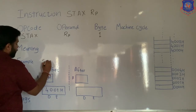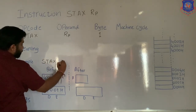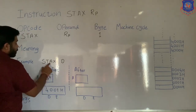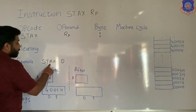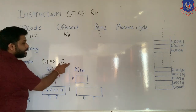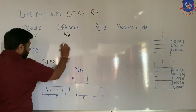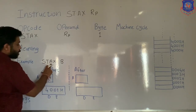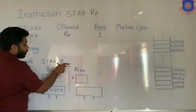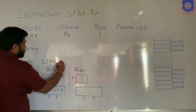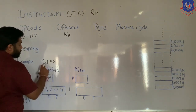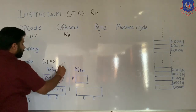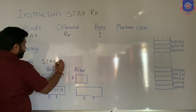Suppose the example is STAX D. STAX D means store data from accumulator to the memory location specified in DE pair. If we write STAX B, it means store data from accumulator to the memory location specified in BC pair. You can also write STAX H, which means store data from accumulator to the memory location specified in HL pair.